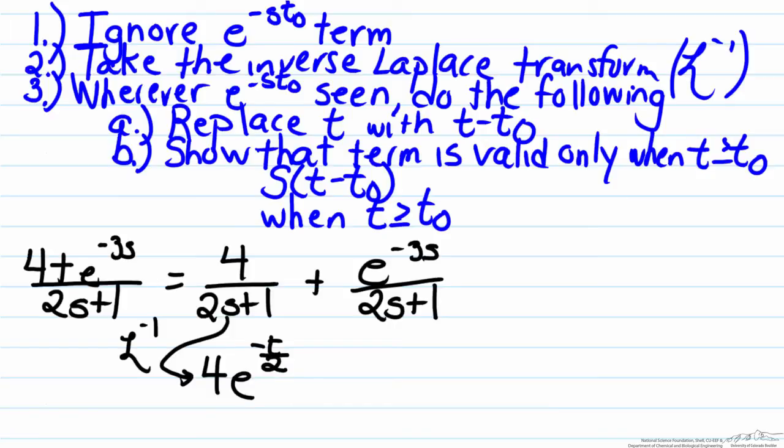Now we will look at the term with the negative 3s in it. If we follow the steps provided earlier, the first step is to ignore the e to the negative s t₀ term. In other words, this is 1/(2s+1). The next step is to take the inverse Laplace transform, it's similar to the one we just did, so therefore that will be e to the negative t over 2.